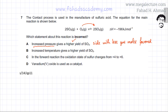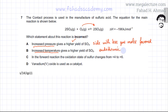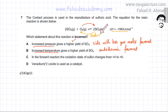Remember we are looking for an incorrect statement. The next statement reads that increased temperature gives a higher yield of SO3. When you increase temperature, endothermic reactions are favored because they absorb energy. The forward reaction is exothermic, so the reverse reaction is endothermic. Increasing temperature favors the reverse reaction, producing more reactants and decreasing the yield of SO3. So the claim of a higher yield is incorrect — it would actually be a lower yield. Option B is an incorrect statement.